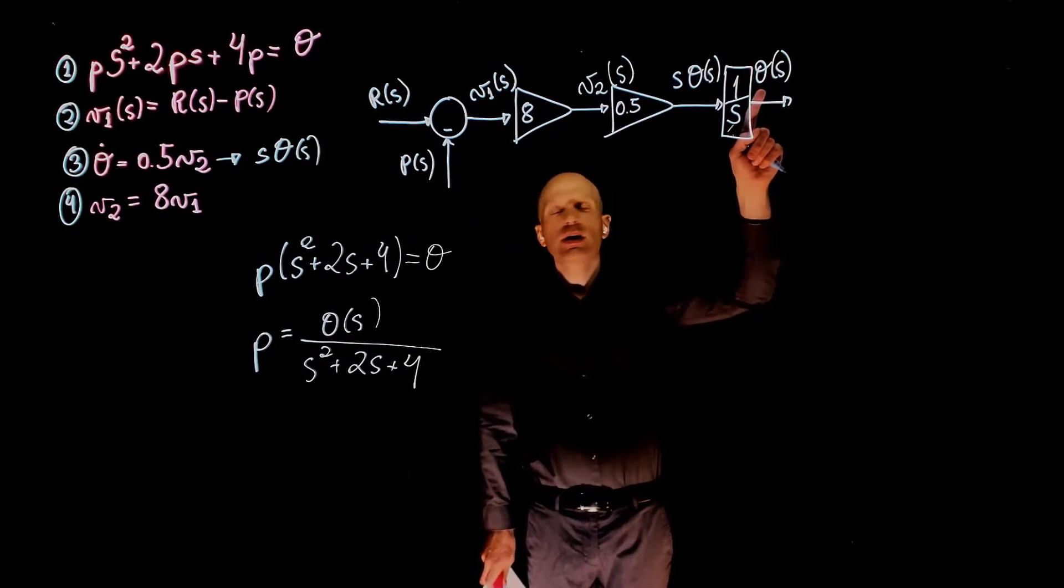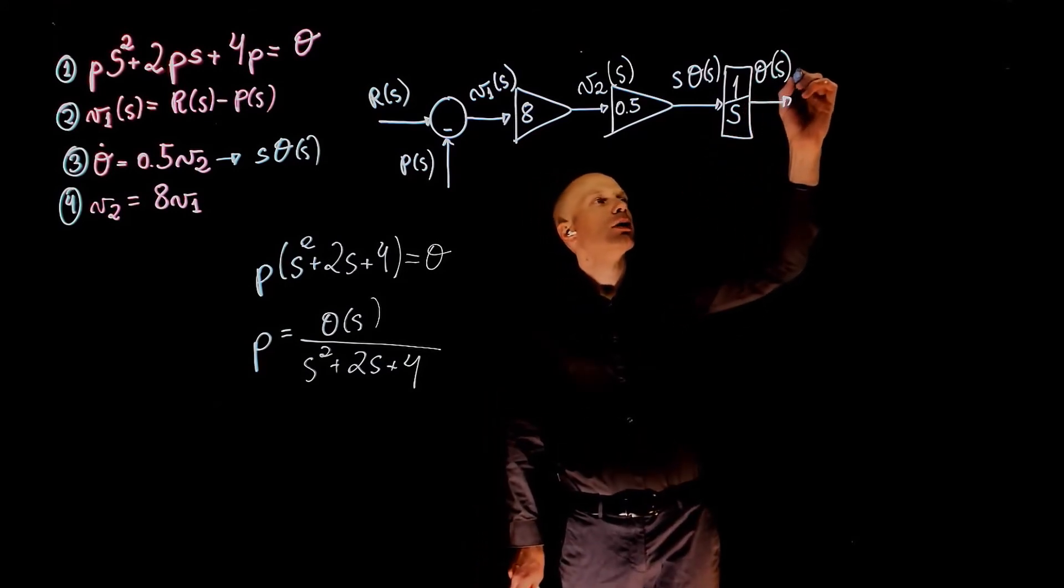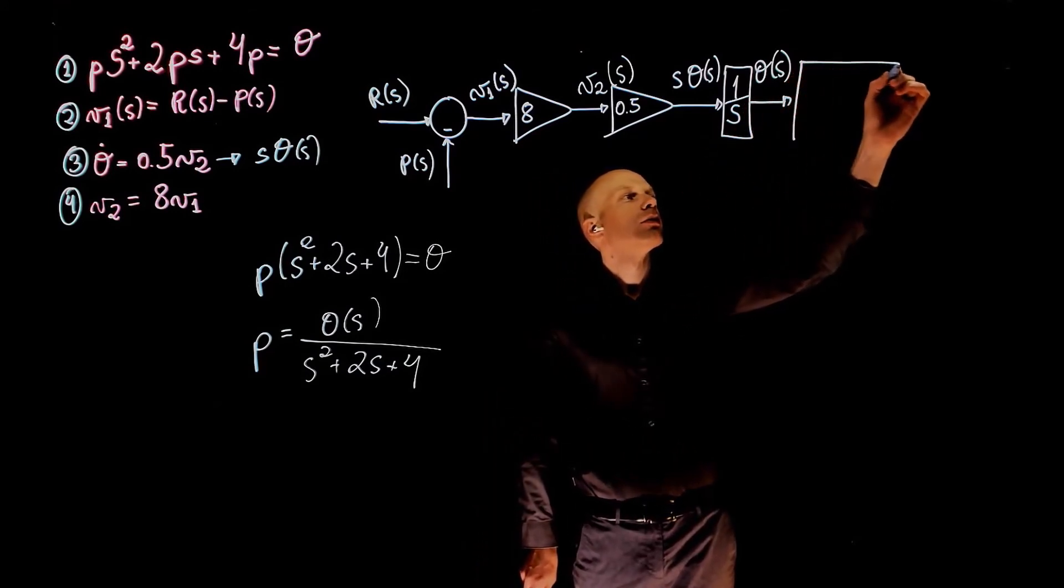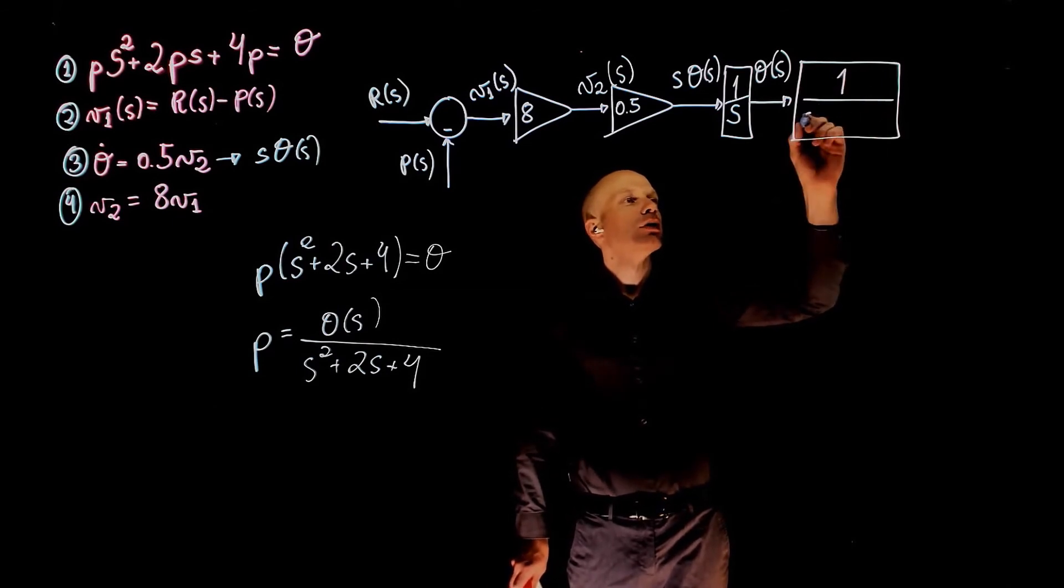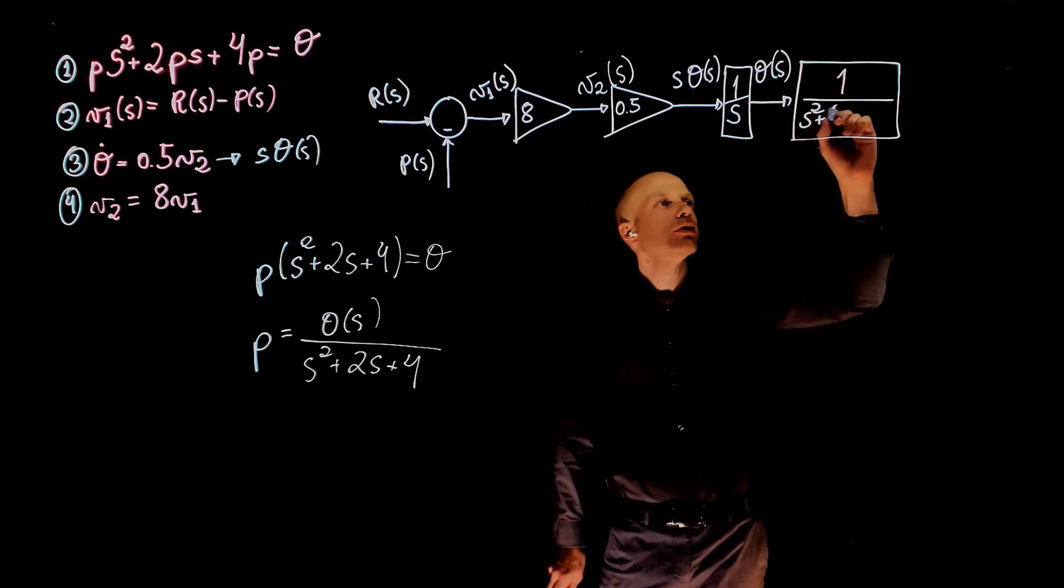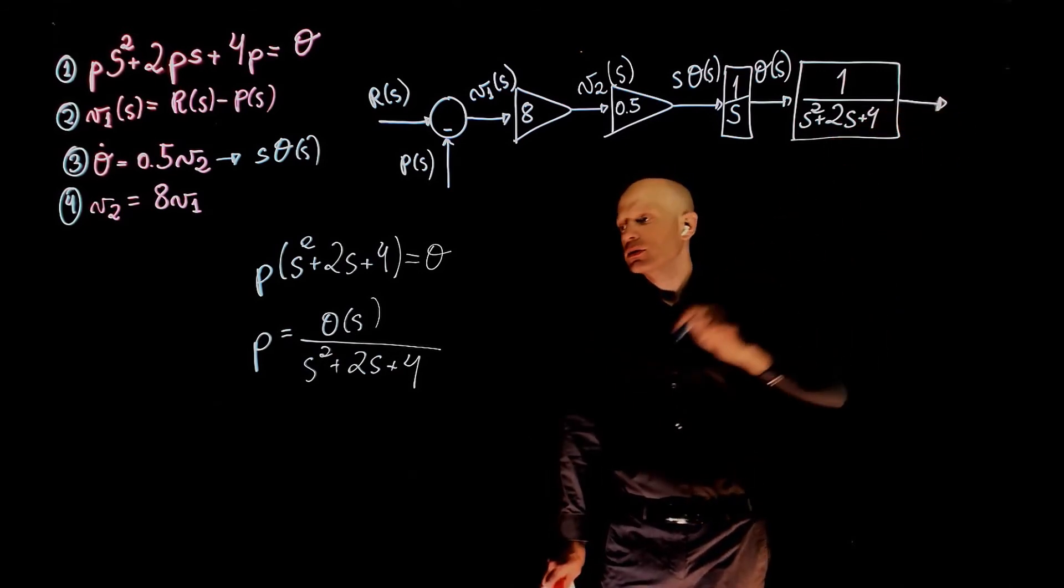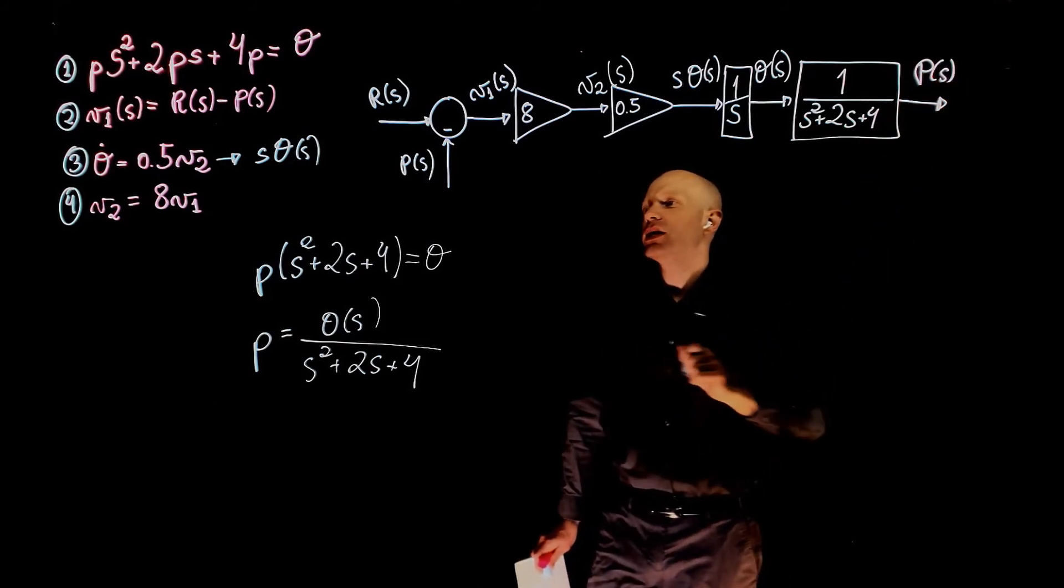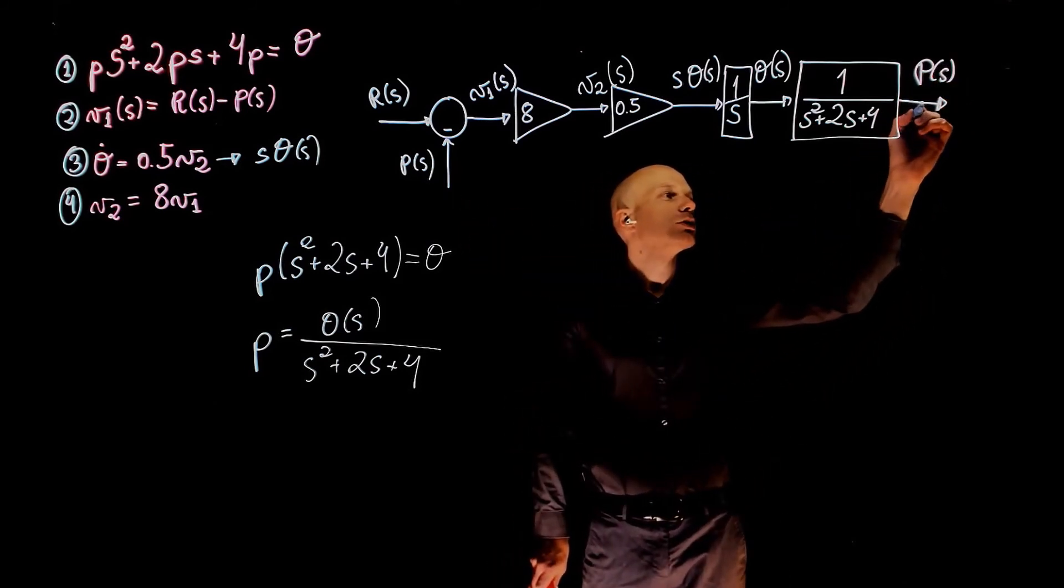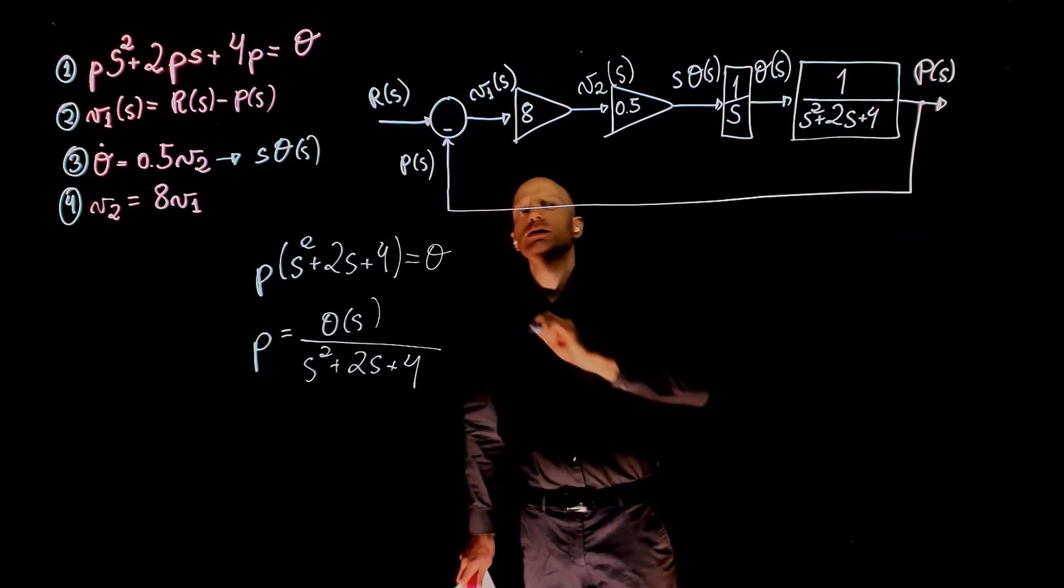We have theta of s here. If we now multiply theta of s by 1 over s squared plus 2s plus 4, we get p of s. And p of s is the original input to the system there. We can now connect them, and this closes the loop.